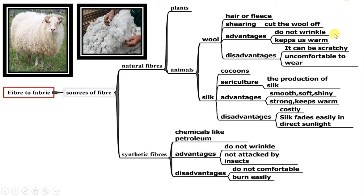Advantages of wool: fabrics made from wool are light, soft, and do not wrinkle easily. Wool is the best fabric to wear in winter because it is light and keeps us warm. Disadvantages: it can be scratchy and uncomfortable to wear.